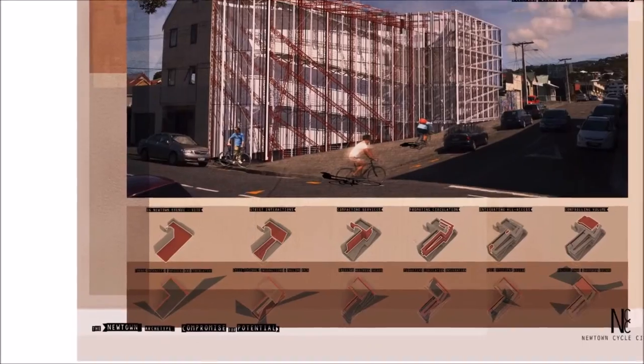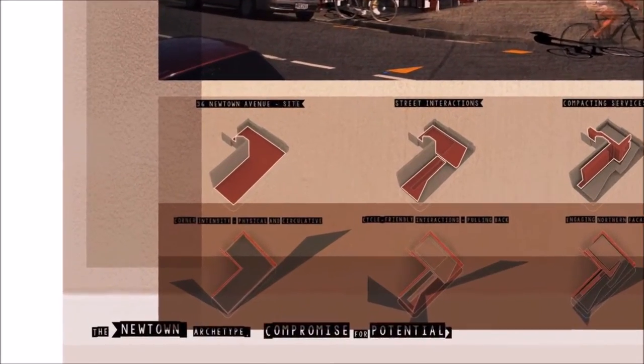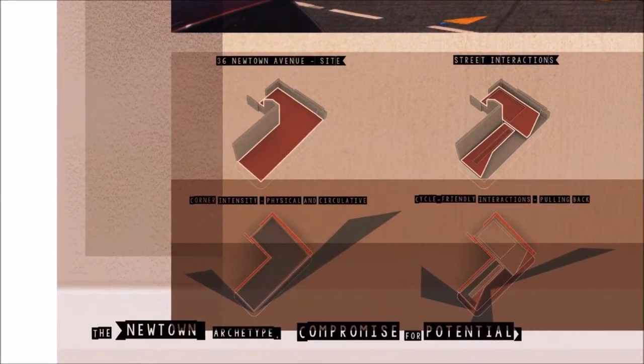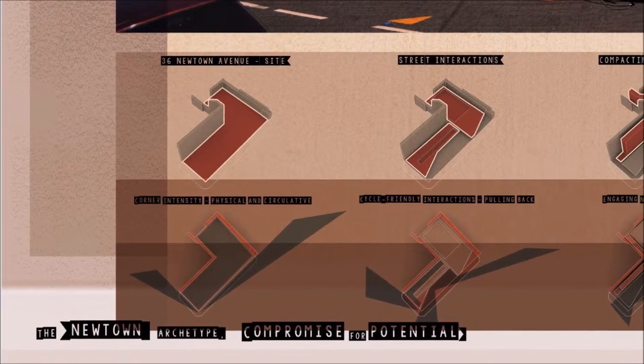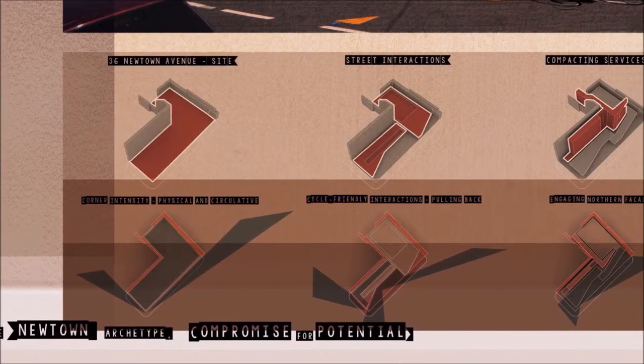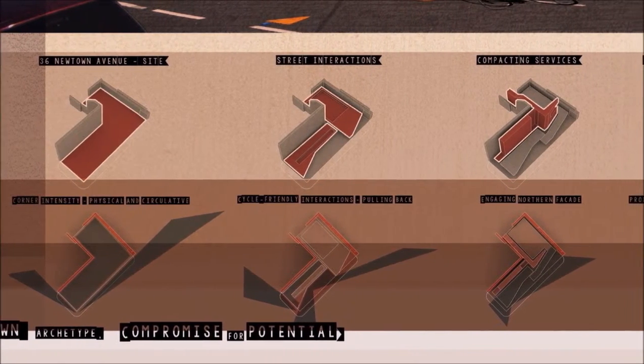This proposed cycle cinema design for 36 Newtown Avenue investigates the compromises of building for the bicycle. This intent is based on highlighting the complications and design opportunities that the emerging Newtown cycleway system may create within urban suburbs.